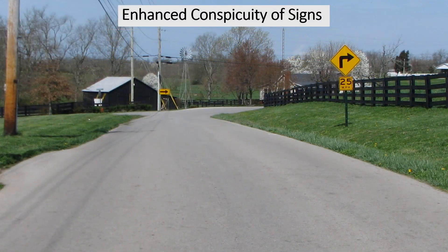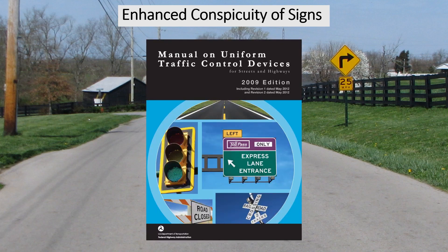Enhanced conspicuity of signs is simply making your sign installations more visible to the public. This is an excellent way to reduce crashes, fatalities, and injuries on your roads. The Manual on Uniform Traffic Control Devices lists several options to enhance the conspicuity of your signs. Most of these are found in Section 2A.15.